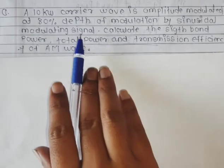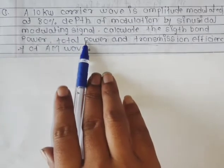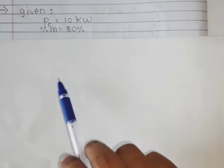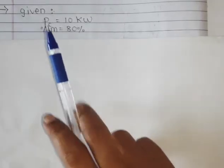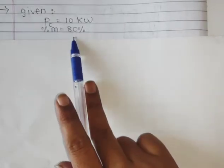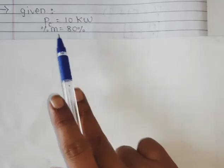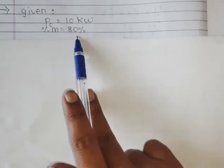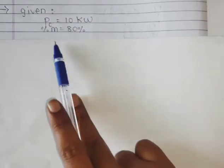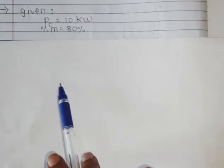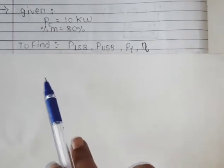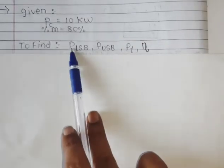See the solution of this problem. Given: carrier power Pc is equal to 10 kilowatt, and modulation index is given as 80 percent (percent of modulation is 80%). We need to find: PLSB, PUSB, total power, and transmission efficiency.